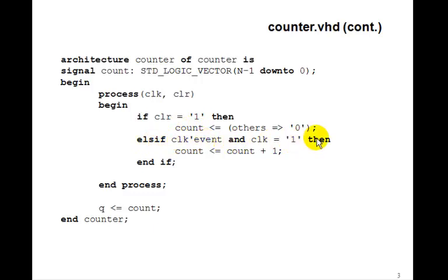Else on the rising edge of the clock, count just gets count plus 1. And then we set Q to count.